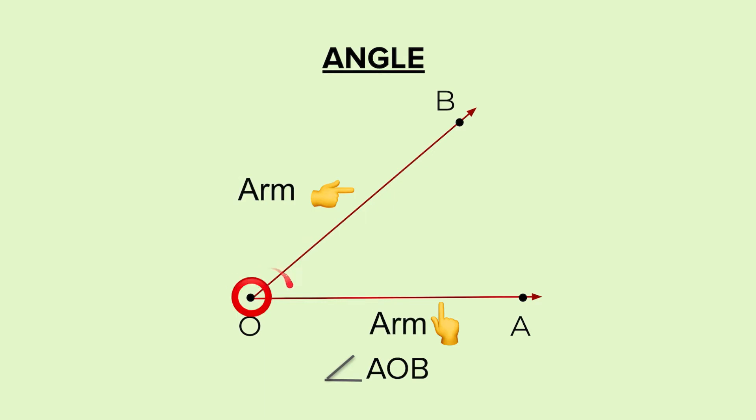And the point at which these two rays meet is called the vertex. Now don't get confused with the word vertex, vertex is nothing but the corner. In geometry, we call the corner the vertex.